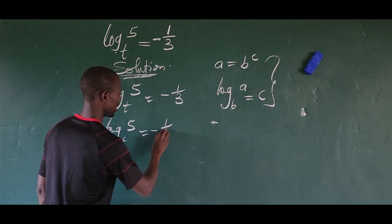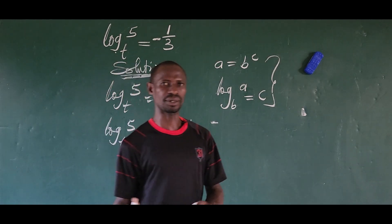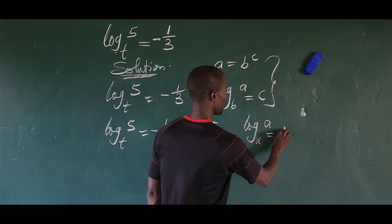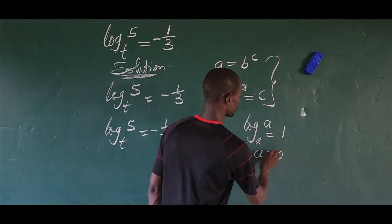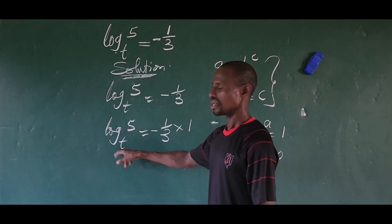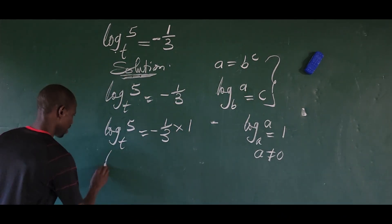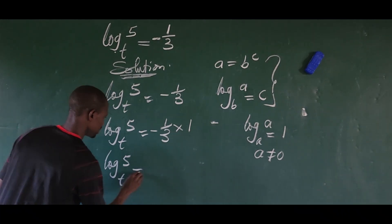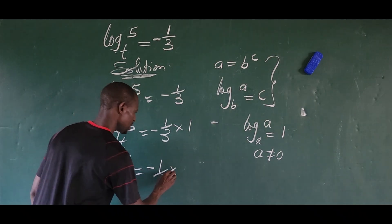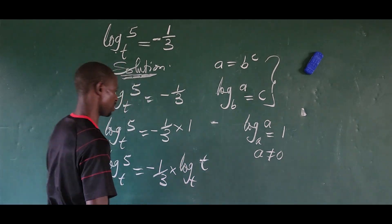I want to rewrite this side of the equation. So if I have log 5 base t equal to minus 1 over 3, I multiply by 1. Now we apply a law in logarithms which says that log a base a equals 1, provided a is not equal to zero. So I introduce log t base t, which is equivalent to 1. Applying this law, I have: log 5 base t equals minus 1 over 3, times log t base t.